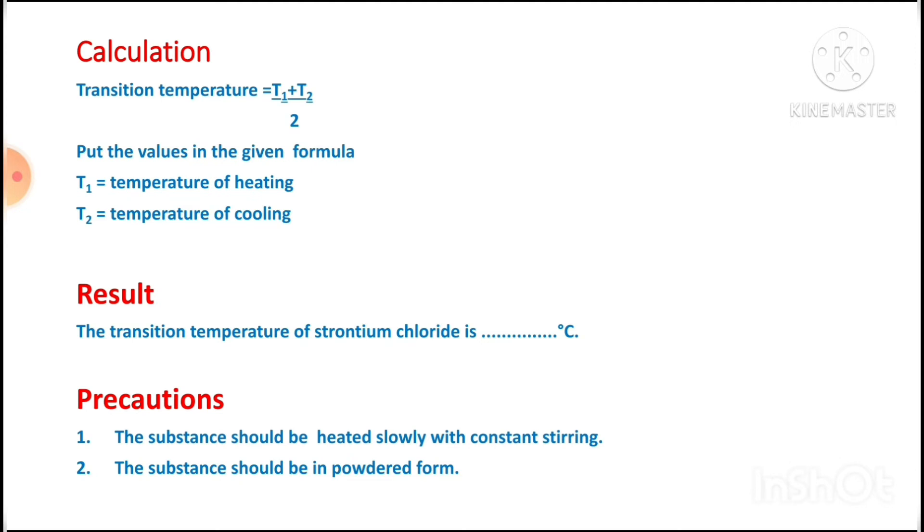The formula is T1 plus T2 divided by 2. Put the values in the given formula and find the result of the transition temperature of strontium chloride in degrees Celsius.